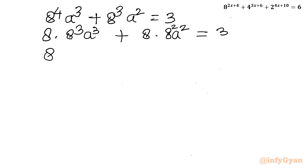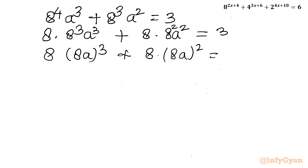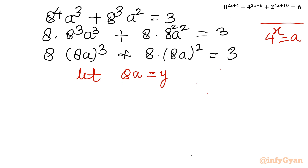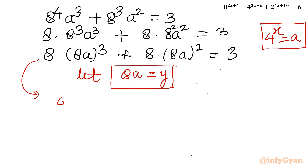We can rewrite this as 8·(8a)^3 + 8·(8a)^2 = 3. Now it is substitution time again. Let 8a = y. Since a = 4^x was our first substitution, this is our second substitution. So the equation becomes: 8y^3 + 8y^2 - 3 = 0.